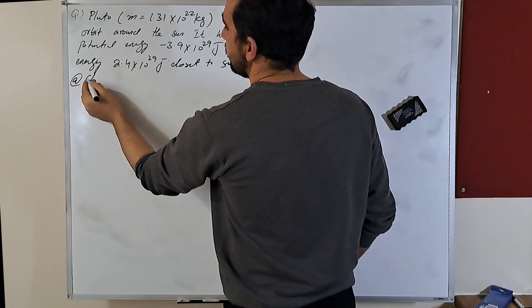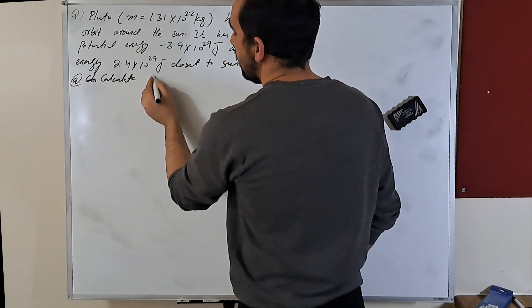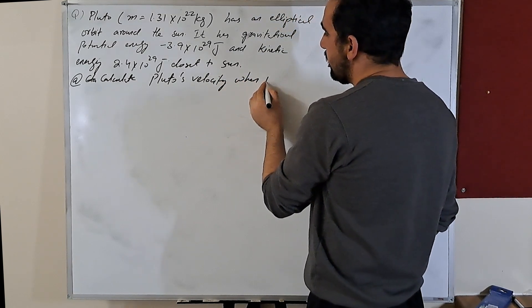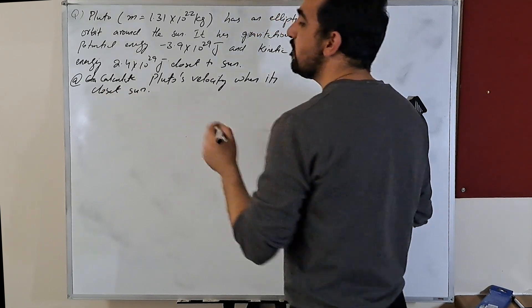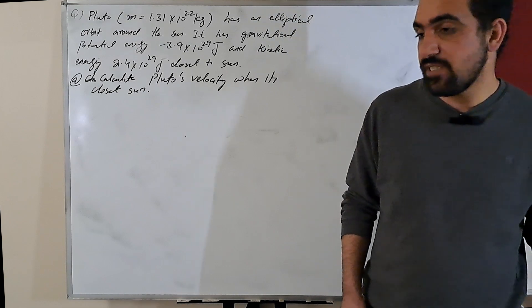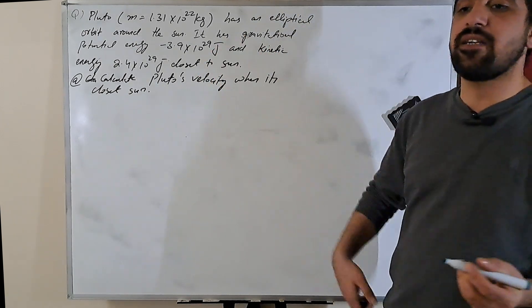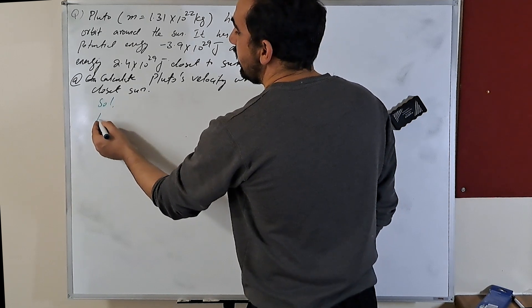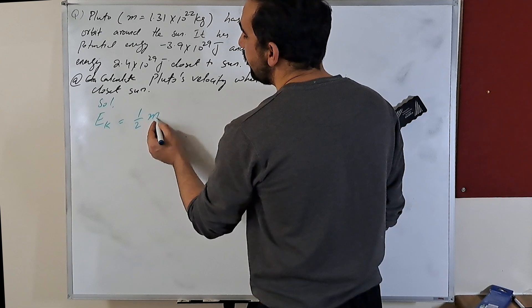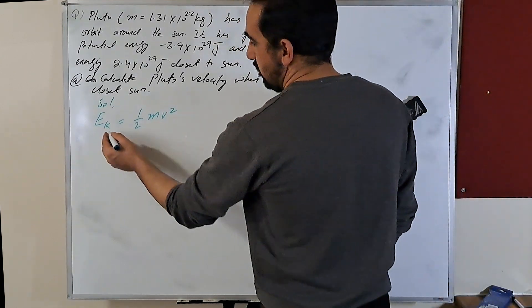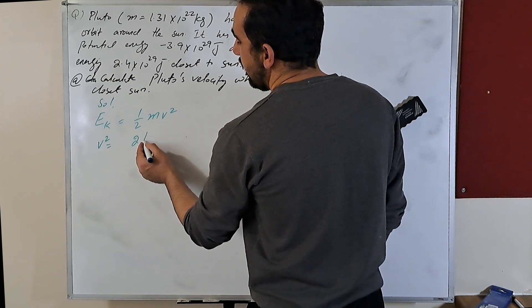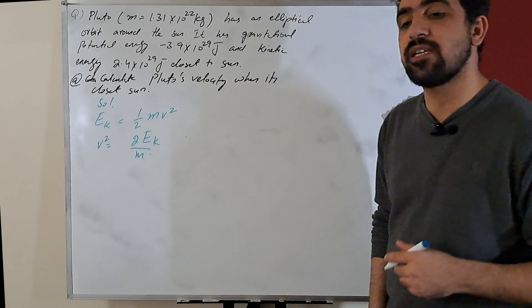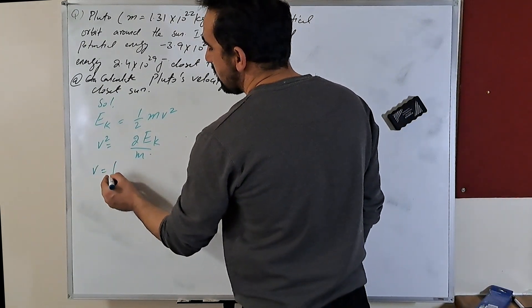We need to calculate Pluto's velocity when it's closest to the Sun. The beauty of physics is that we can find its velocity from the data if we know its kinetic energy at that point. We know kinetic energy equals one-half m v squared, so v squared equals 2 times kinetic energy divided by m, and therefore v equals the square root of 2 times E-kinetic divided by m.